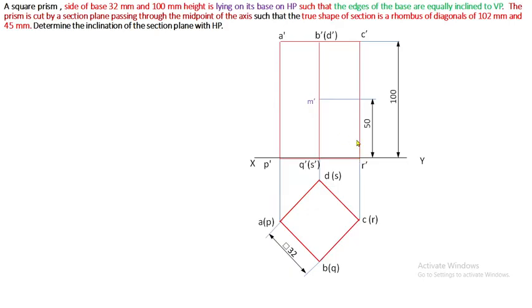Again M dash as center, same 51 as radius, cut C dash R dash. Draw an arc to cut both edges, and finally we complete the section plane. Once again, M dash as center, 51 as radius - how we obtain 51? Half of 102. Cut both A dash P dash as well as C dash R dash. Now draw a section plane passing through the cutting point of A dash P dash and through M dash, joining M dash and C dash cutting point. This is the final section plane.